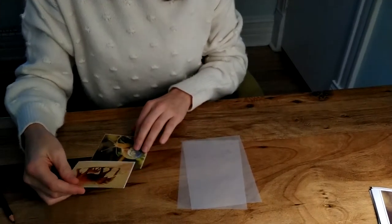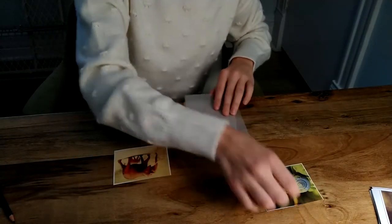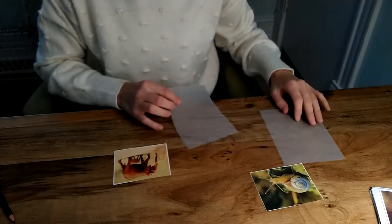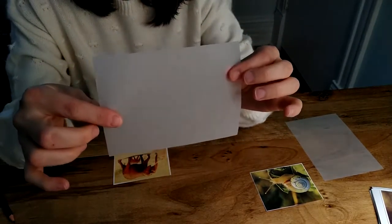All right, I'm going to start with the elephant, put the snail to the side. So this is my tracing paper, it's translucent.